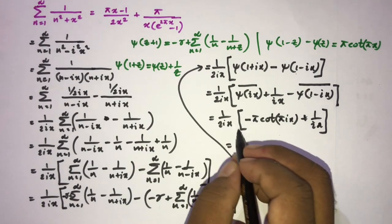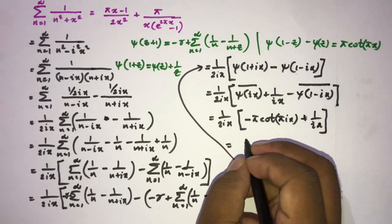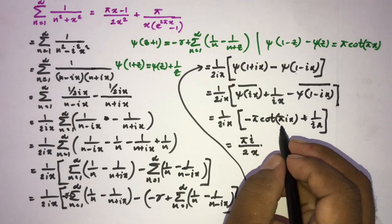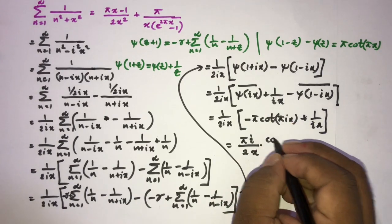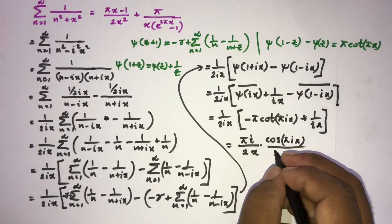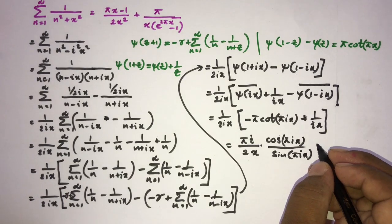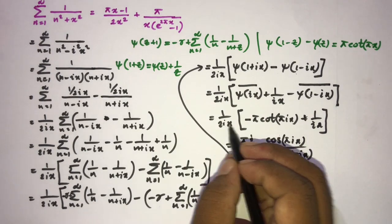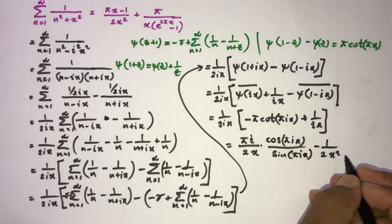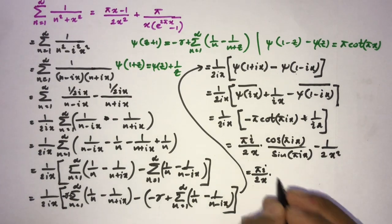Multiplying through by 1/(2ix): the term −π · cot(πix)/(2ix) and the term 1/(ix) · 1/(2ix) = 1/(2i²x²). Since i² = −1, the second term becomes −1/(2x²), and the first gives −π · cot(πix)/(2ix).